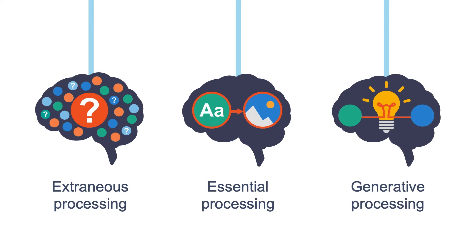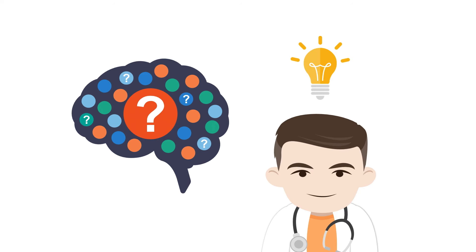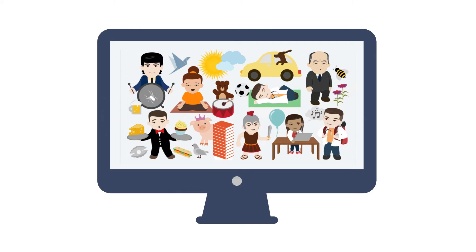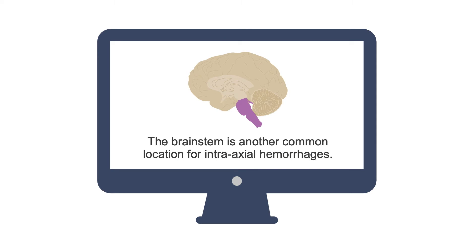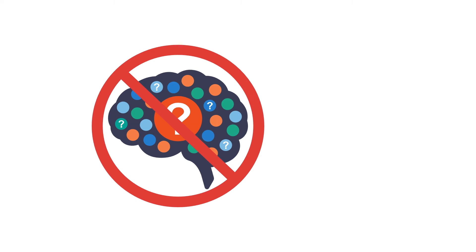Extraneous processing refers to cognitive processing that does not support the instructional goal. It's usually caused by poor instructional design. This happens, for example, when too much information is presented on the screen and learners have to select what to pay attention to, or when there's an image accompanied by written text which doesn't align with what the speaker says. You need to get rid of any extraneous processing if you want to be a successful teacher.